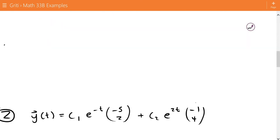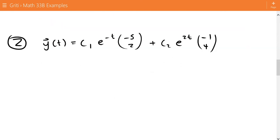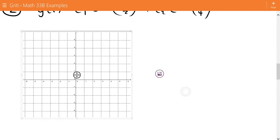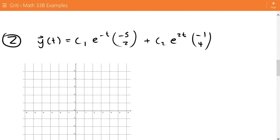So then we have the same instructions for number 2. For number 2 we have a positive and negative eigenvalue, so we know this is going to be a saddle.